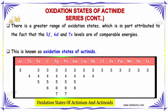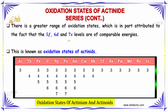There is a great range of oxidation states, which is in part attributed to the fact that the 5f, 6d, and 7s levels are of comparable energies. This is the basis for the wide oxidation state range of the actinides.